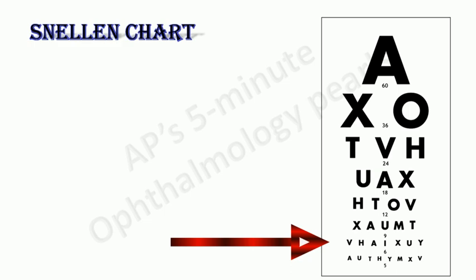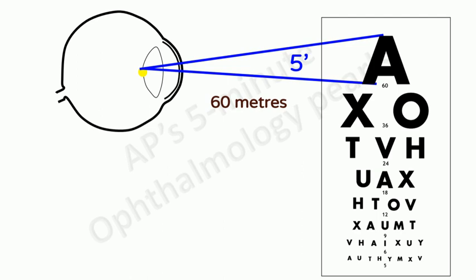The size of the letters is such that each letter subtends an angle of five minutes at the nodal point of the eye at a particular distance. So, the top letter subtends an angle of five minutes at the nodal point at a distance of 60 meters.